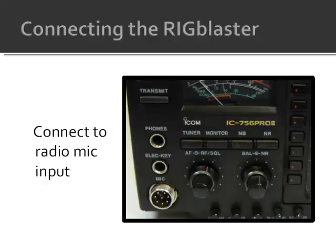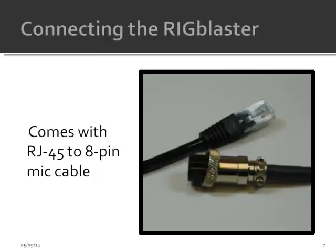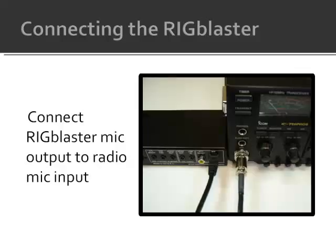The Rig Blaster connects to your radio through the radio's microphone input. This handles the transmit audio. The Rig Blaster comes with an RJ45 to 8-pin screw-on microphone cable, which connects to most manufacturers' radios. Low-cost adapters and alternate cables are available as accessories if needed.